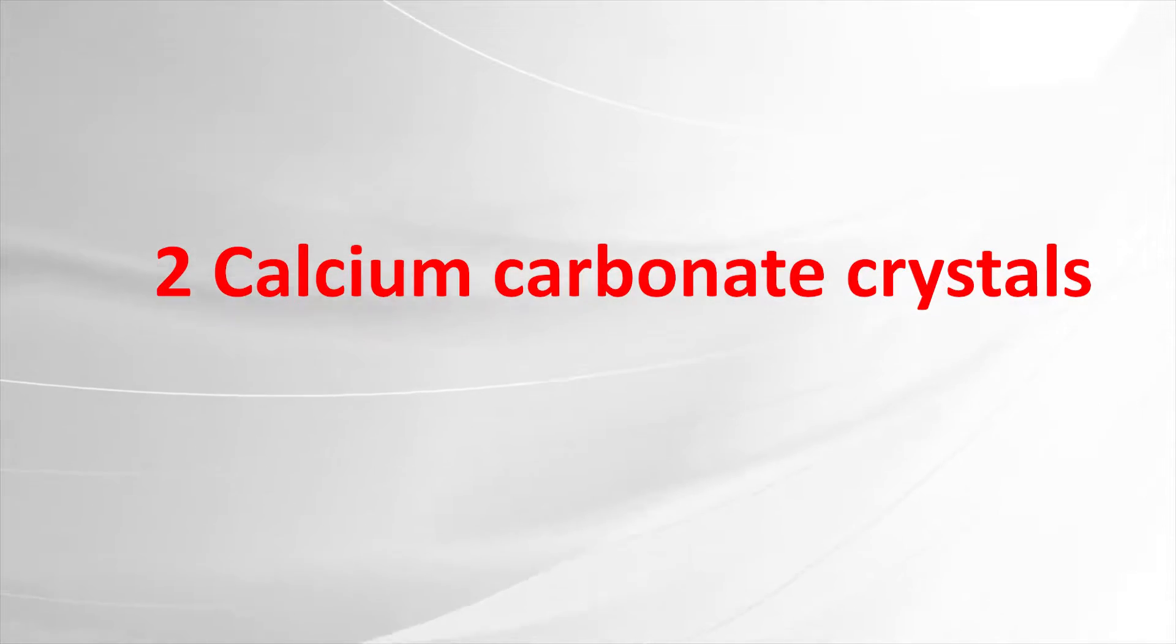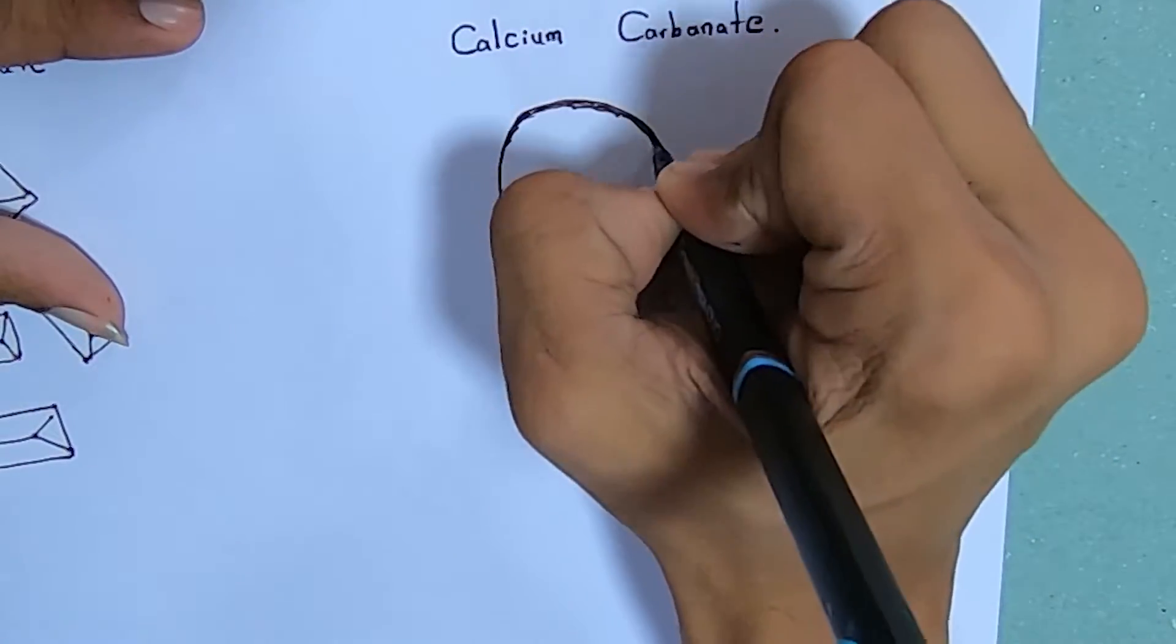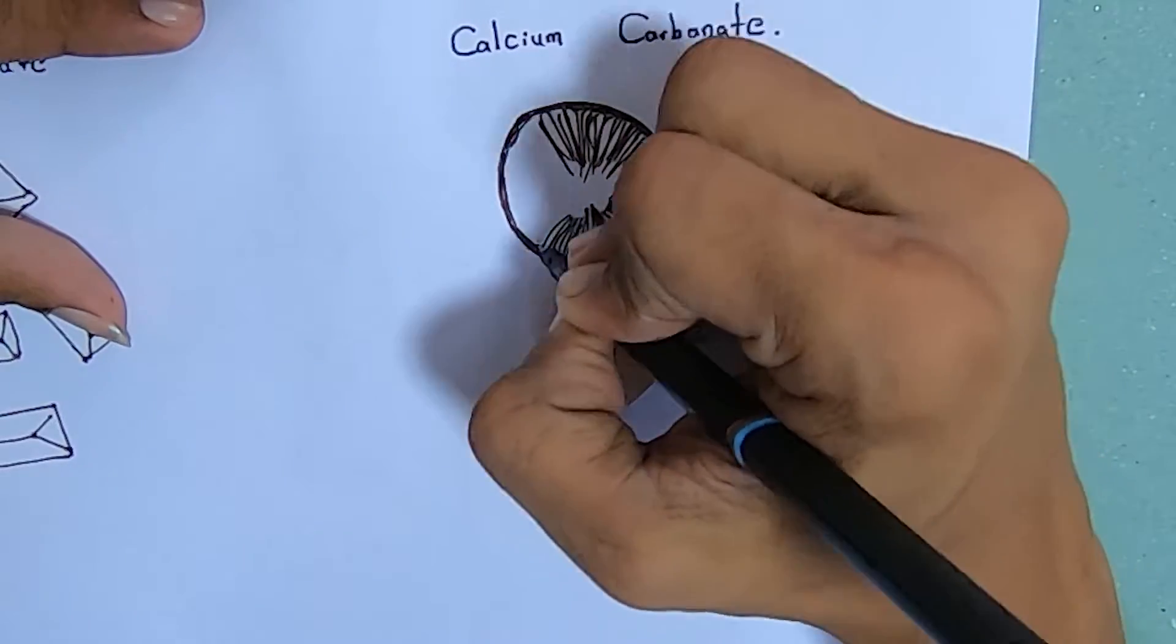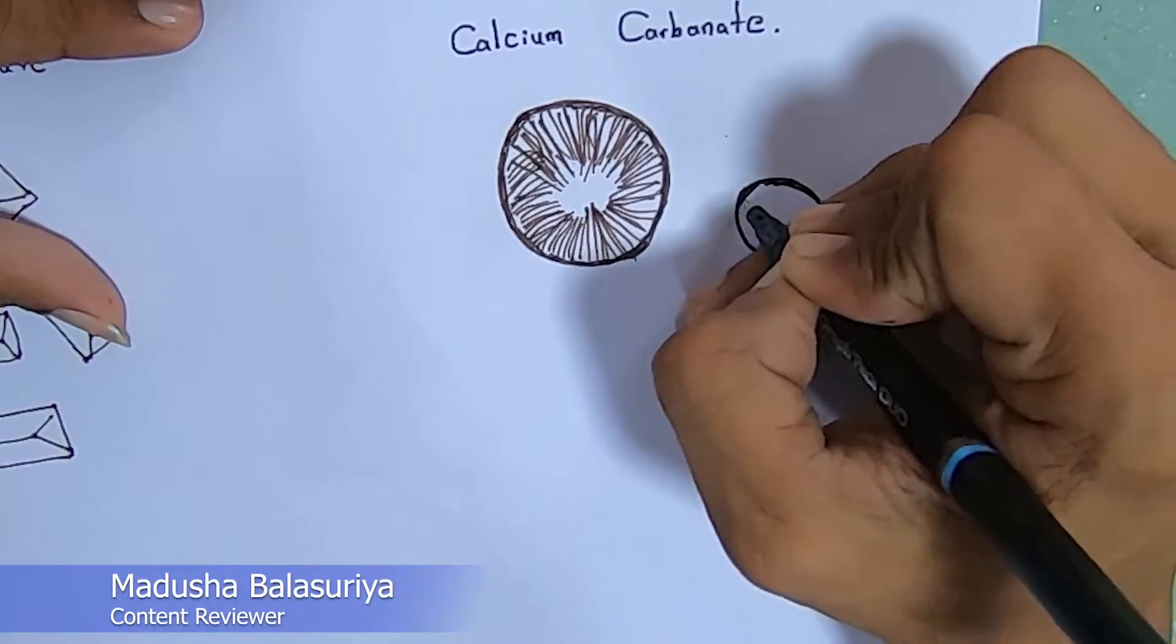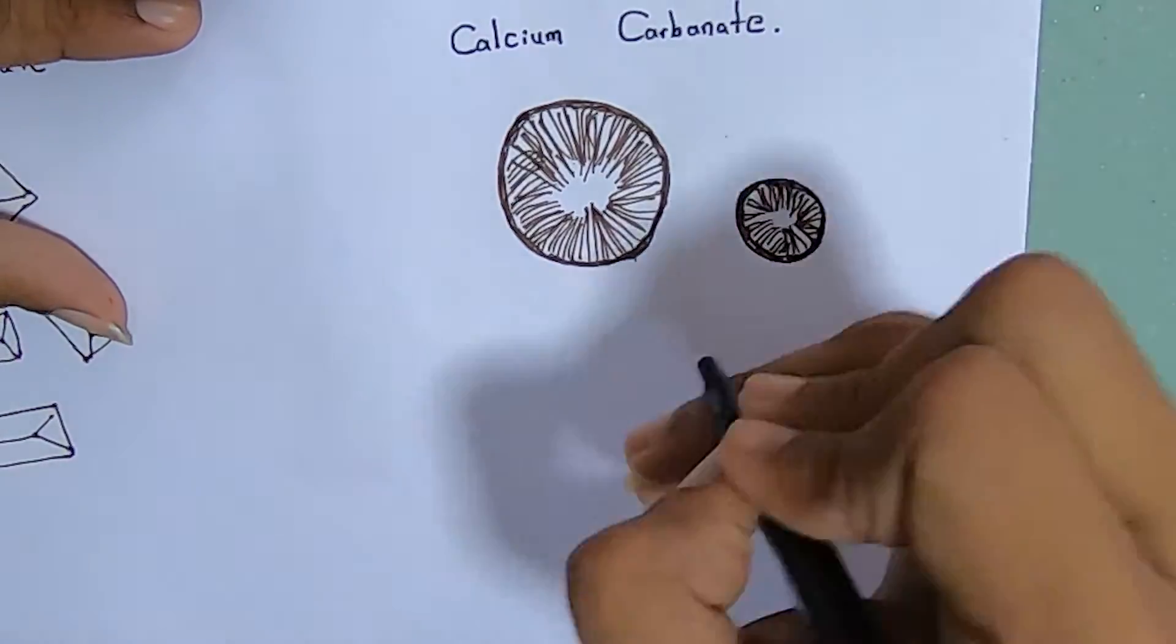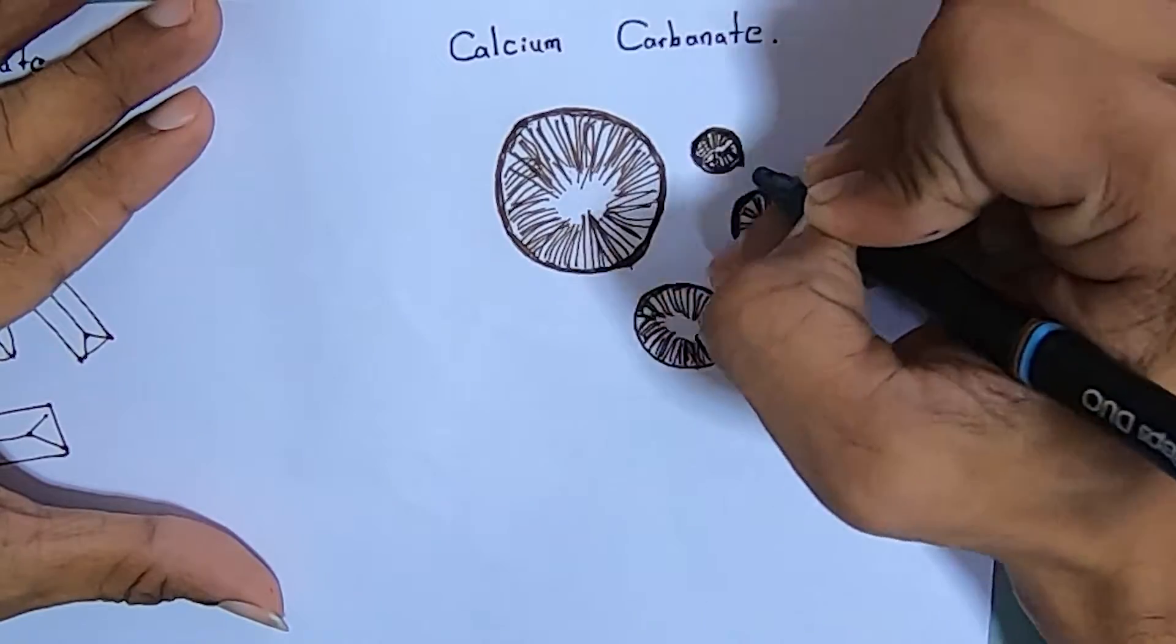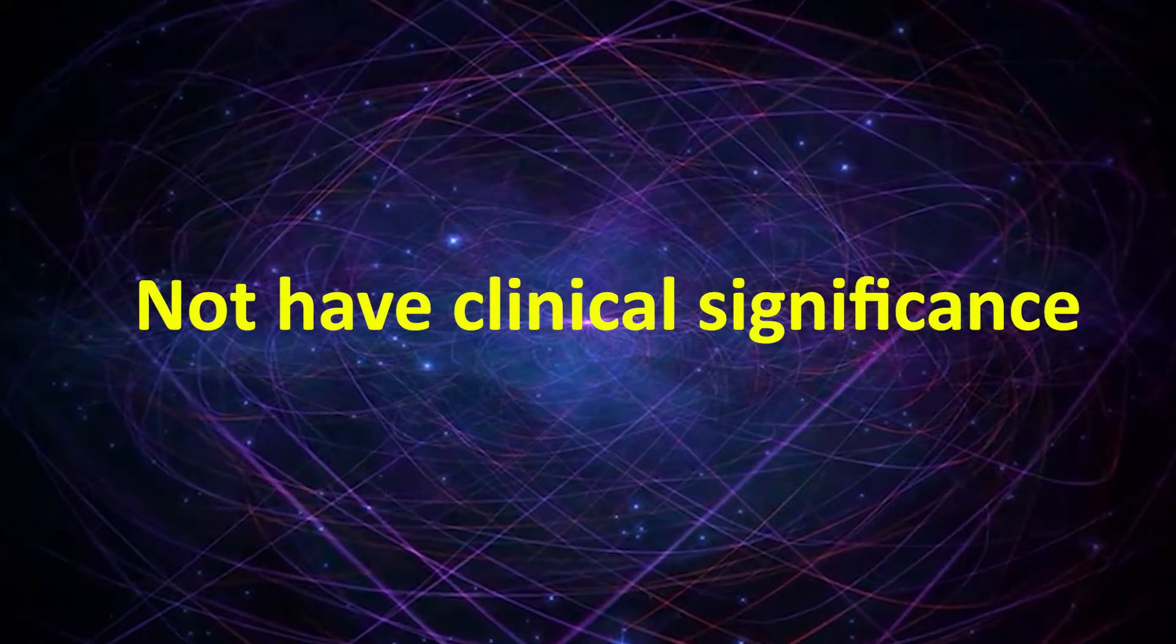Calcium carbonate crystals are variable-sized crystals that frequently appear as long, large spherical shapes with radial striations. They do not have clinical significance. Also, they are soluble in acetic acid.